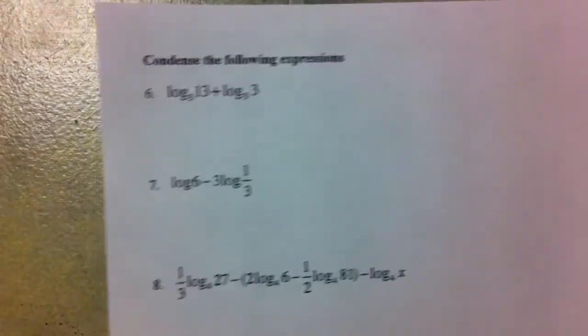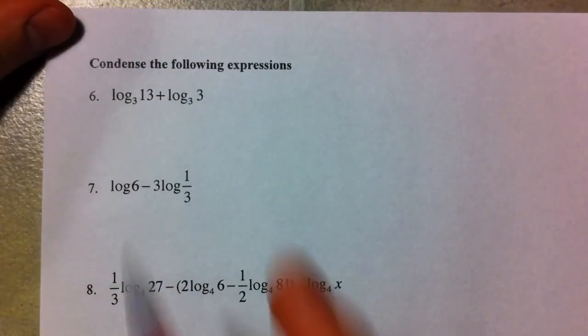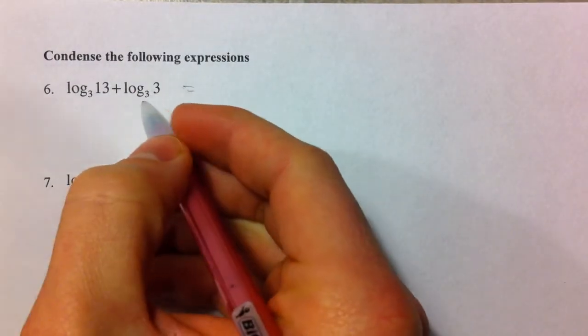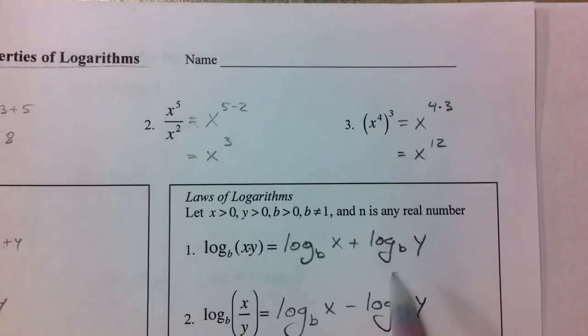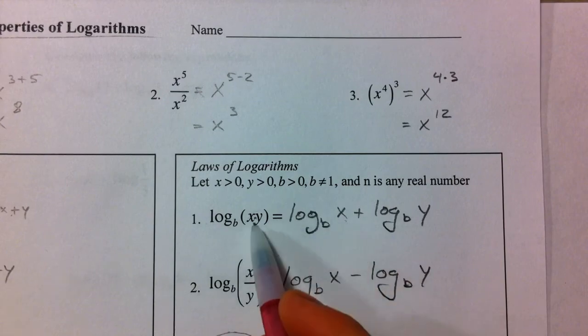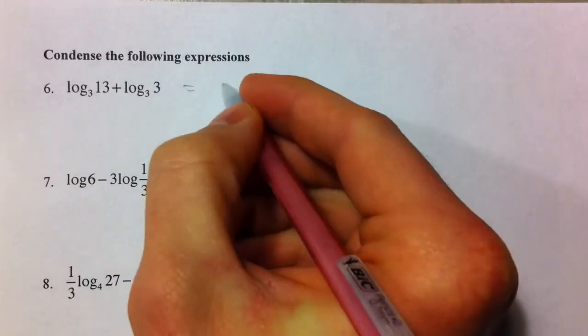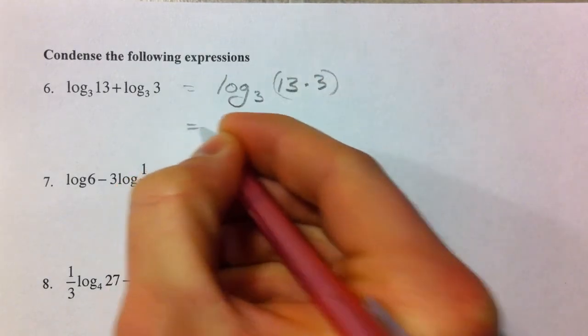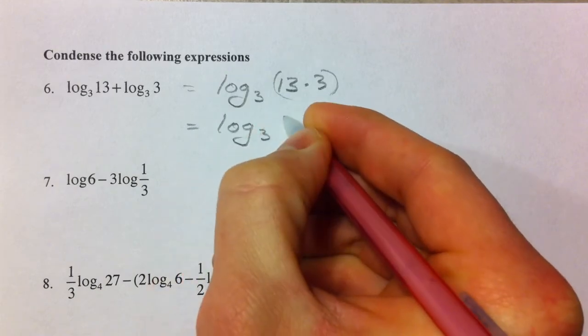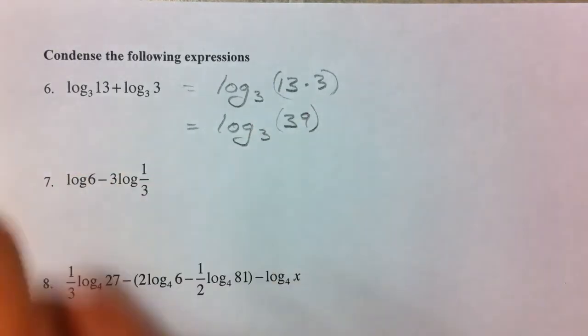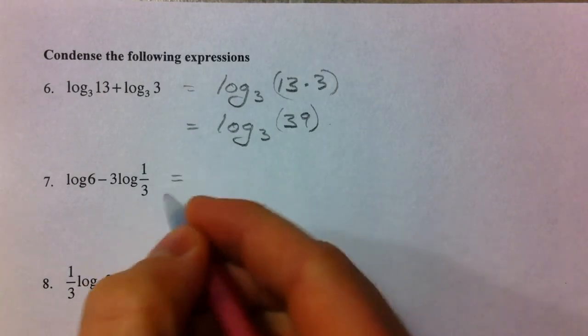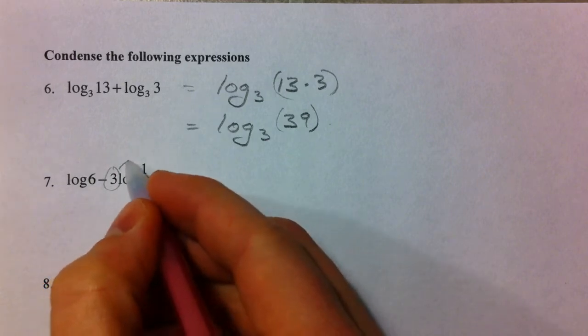And, now, we're going to condense it. That's when we go the opposite direction. We condense it, and another way to say it might be write as a single logarithm. And, so, for this, if we have 2 logs that are added, we're going to go from this side of the property to this side of the property. So, we could change it to log base 3 of 13 times 3 or log base 3 of 39. And, if 3 to some power was 39, you could simplify that some more.